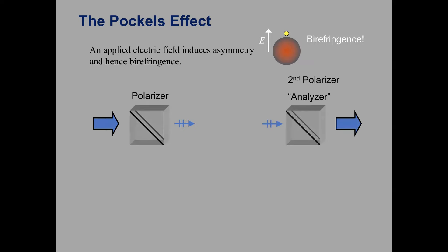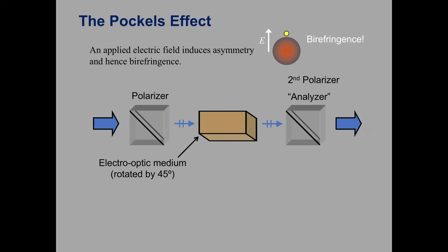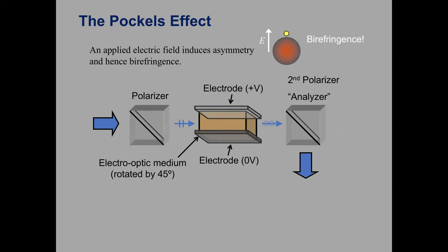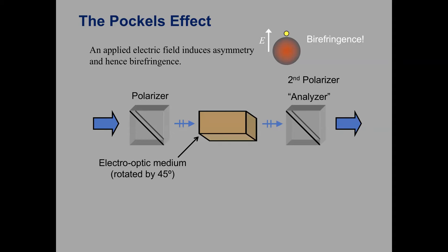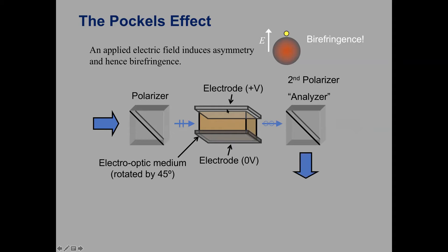We can set up an experiment like this: we take two polarizers — the first polarizes incoming unpolarized light vertically, and the second, sometimes called an analyzer, is placed after. In between we put what we call an electro-optic medium, rotated 45 degrees relative to the polarizer, and we apply a voltage to it — for instance by placing it inside a capacitor. Before voltage is applied the light's polarization isn't altered, but once we apply the voltage we can induce a phase shift between the horizontal and vertical components of the light's polarization, and convert the light from linear to circularly polarized.